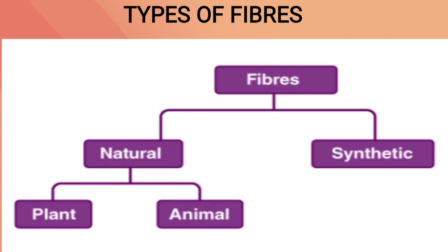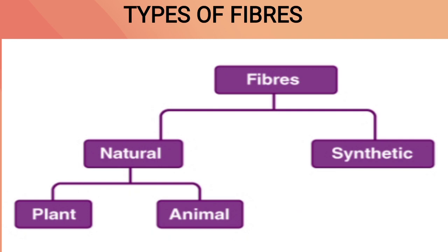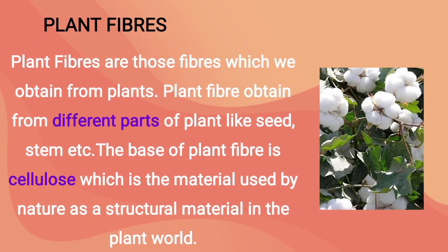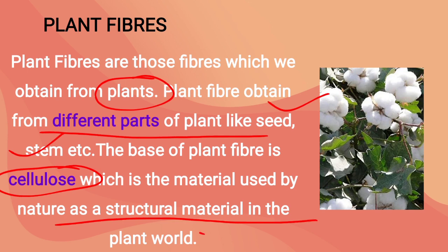In this chapter we focus on animal fibers, because in class 6 you already studied plant fibers. Plant fibers are obtained from different parts of a plant like seed and stem. The basic unit of plant fiber is cellulose, which is the structural material used in the plant world.